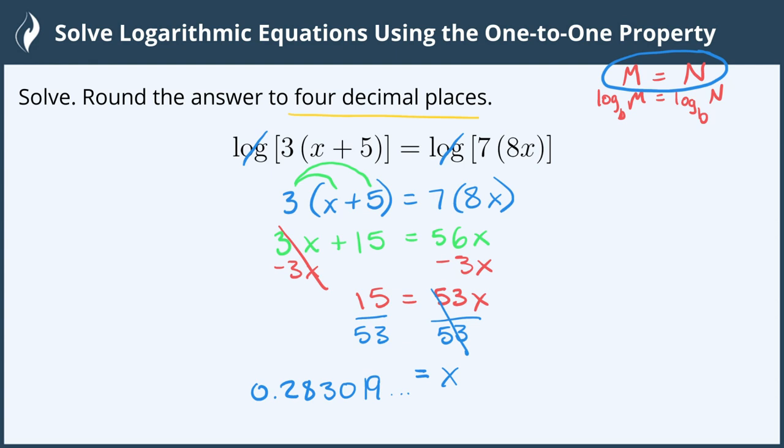We were asked to round this to four decimal places. 1, 2, 3, 4, so we'll look to the number to the right. 1 is less than 5, so this rounds to 0.2830, and now we're all done.